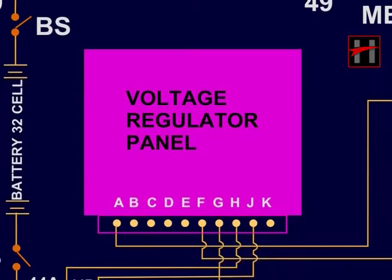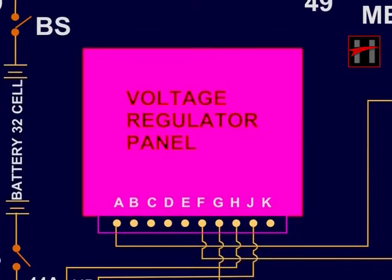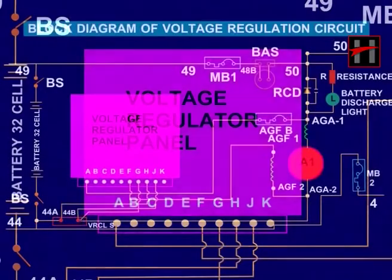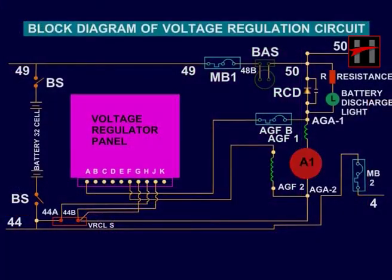The load current does not exceed 120 Amperes. When the load current exceeds 120 Amperes, the output voltage of the AG drops to limit the load current at 120 Amperes.